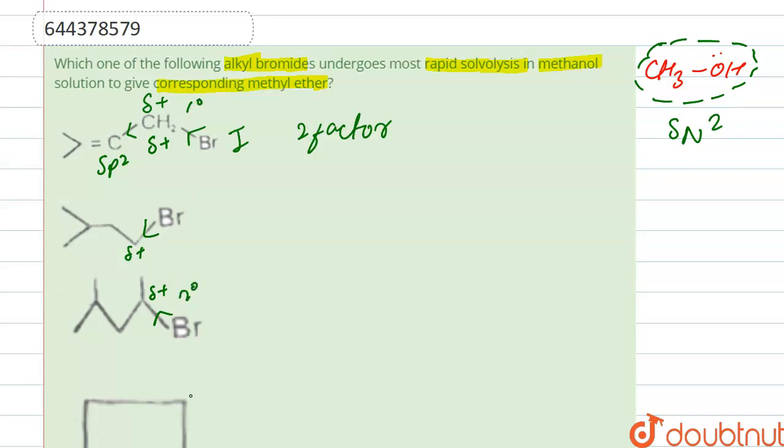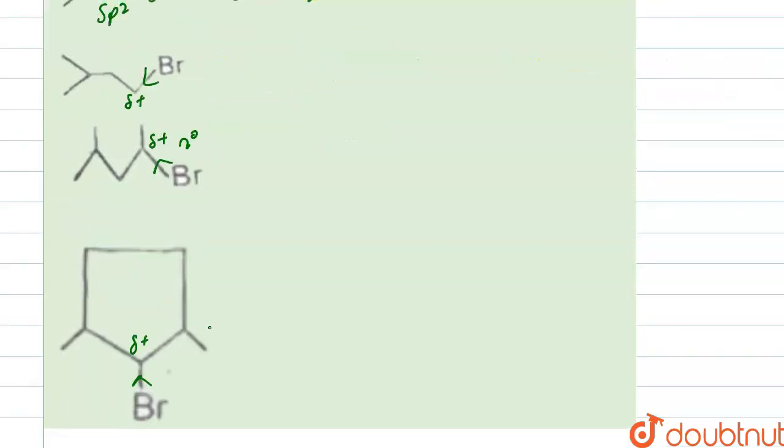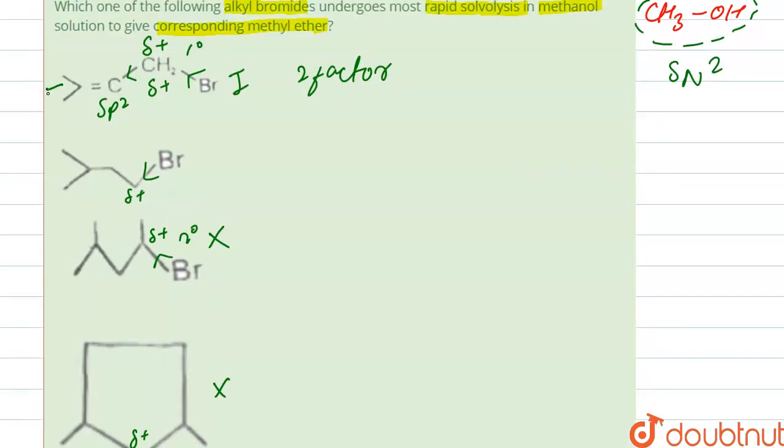Here it is secondary carbocation, and here it is also secondary carbocation. So steric hindrance is more than primary, so these two are not our correct option.